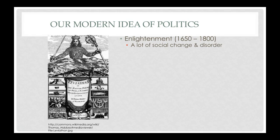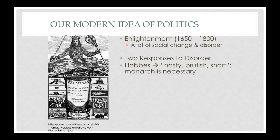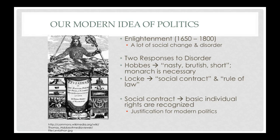During the Enlightenment there was a lot of social change and disorder going on. We had two different schools of thought in response to this disorder. Hobbes said that life is nasty, brutish, and short, and that a monarch is necessary to keep everyone in line. Then you had Locke, who said we have to exist with social contracts, there has to be rule of law, and that basic individual rights are recognized.